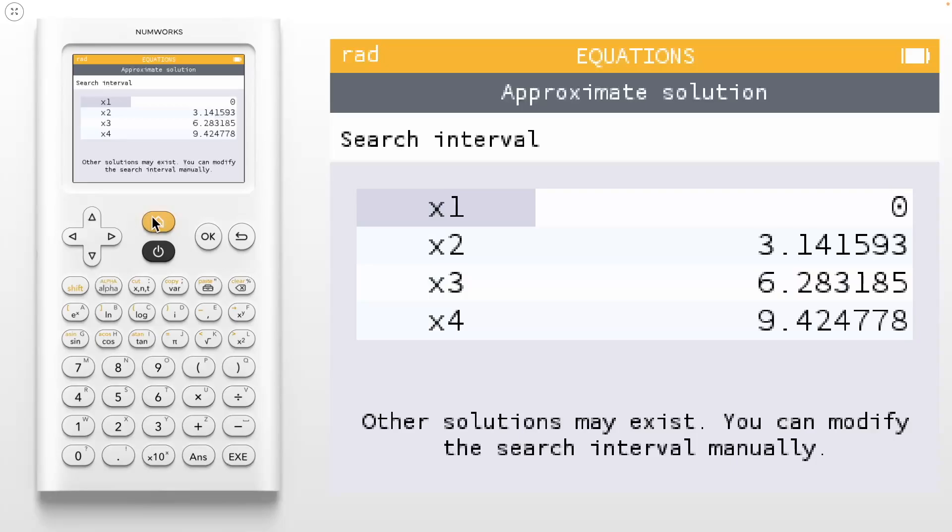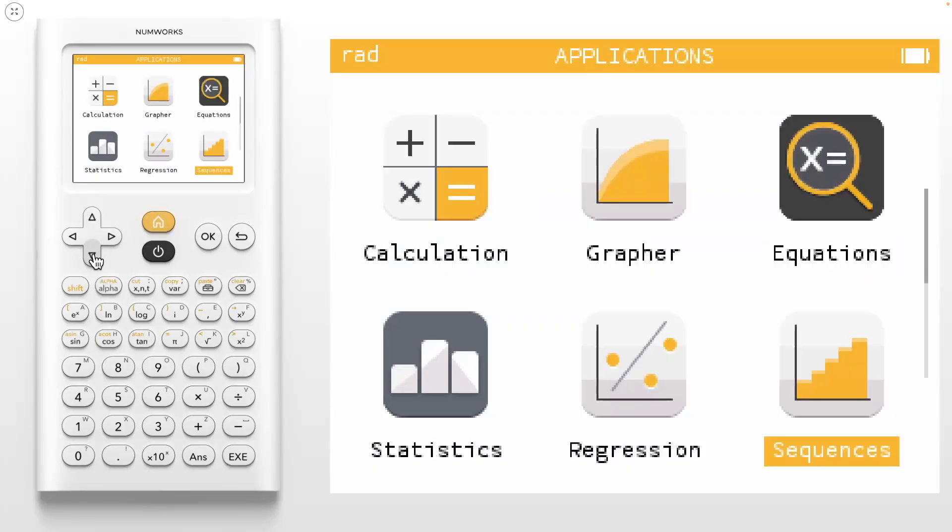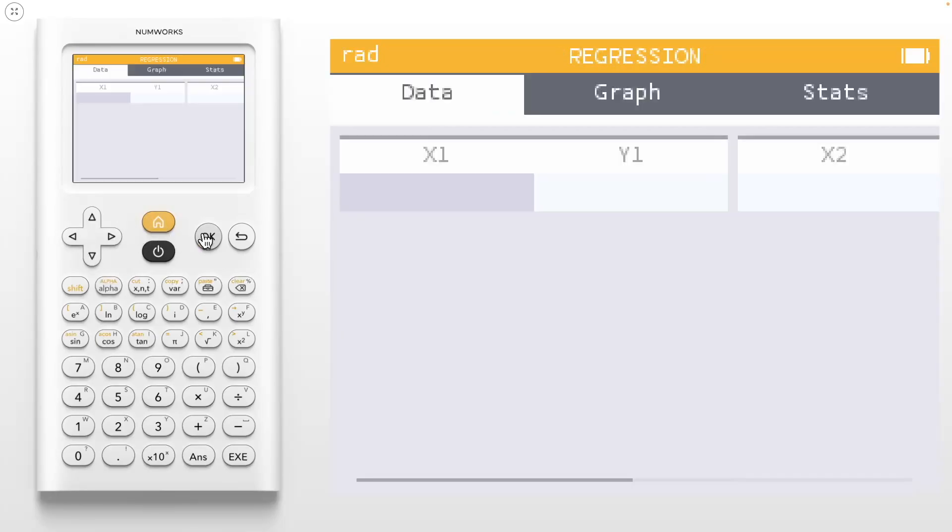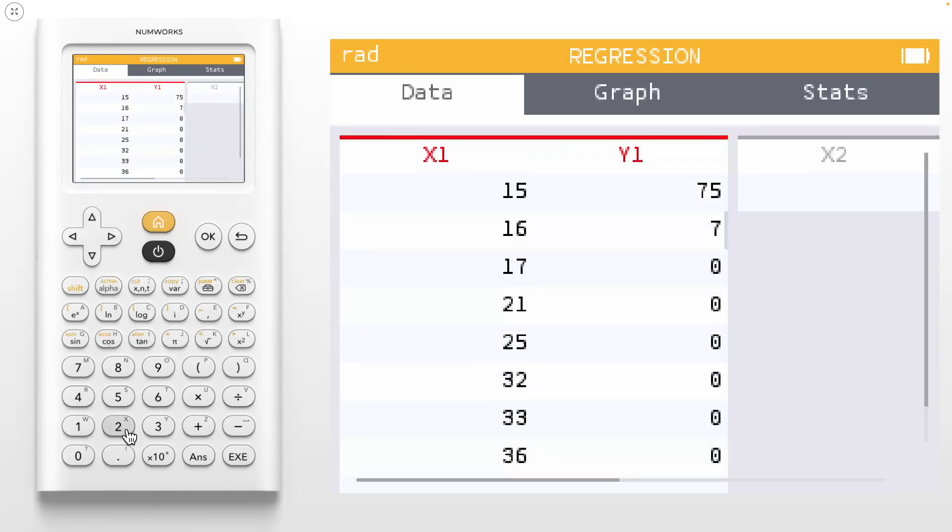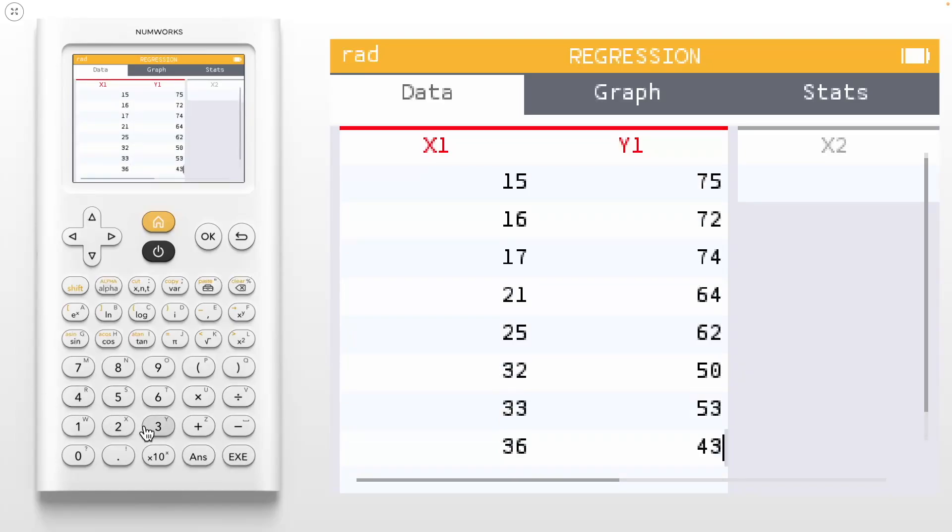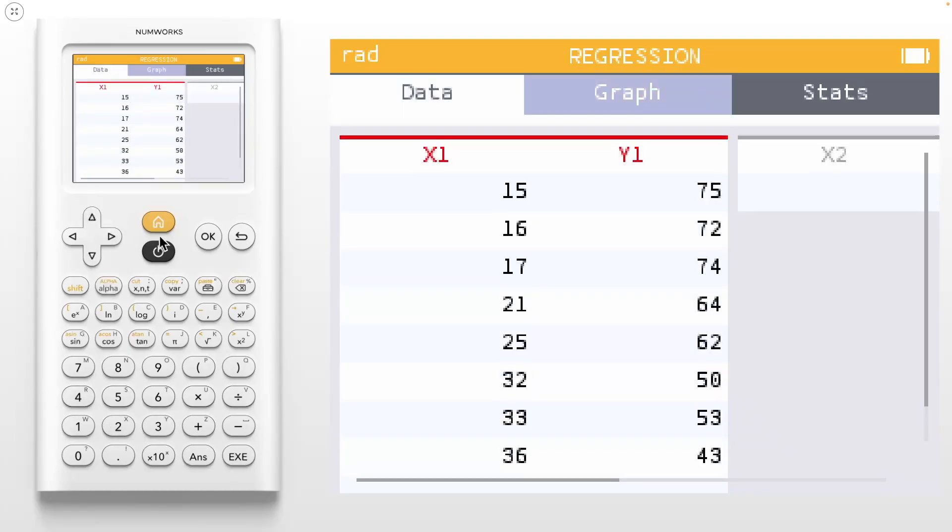The next app that we will take a look at is the regression application. With the regression app, you can display a scatter plot, plot a regression model, view a residual plot, and make predictions. Just like with the grapher app, this app is organized into tabs. The first tab is where we can input our data. Let's add some data for x1 and y1. Once your data is entered, navigate to the graph tab to view the scatter plot.